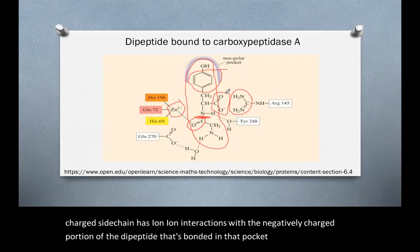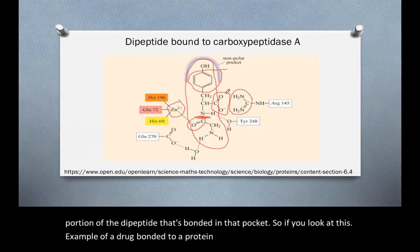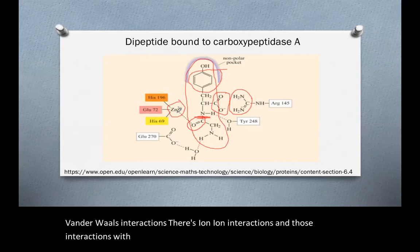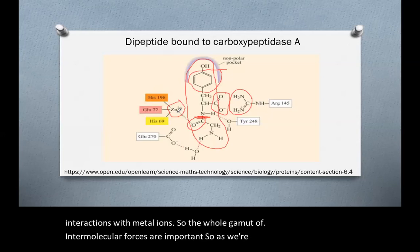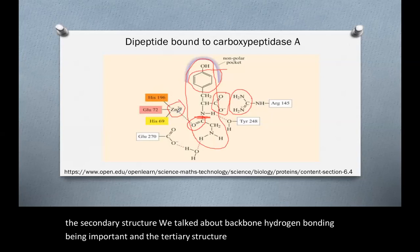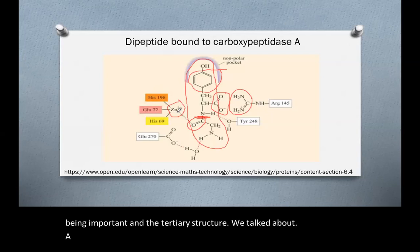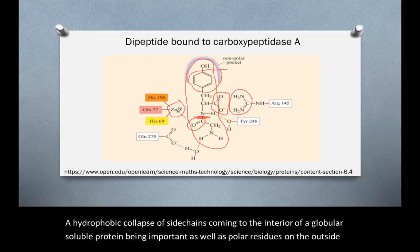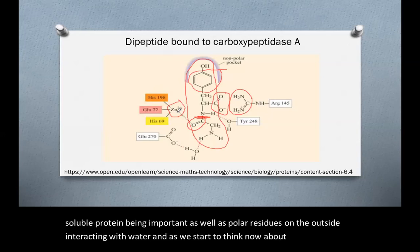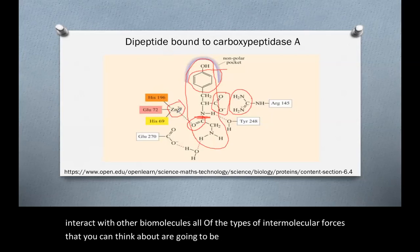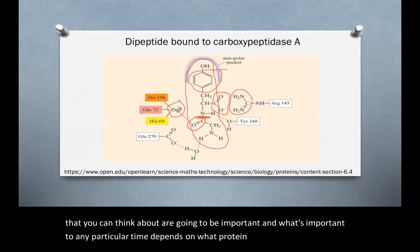So in this example of a drug bonded to a protein, there are hydrogen bonds, van der Waals interactions, ion-ion interactions, and interactions with metal ions — the whole gamut of intermolecular forces. In secondary structure, backbone hydrogen bonding is important. In tertiary structure, hydrophobic collapse of side chains to the interior of a globular soluble protein is important, along with polar residues on the outside interacting with water. As proteins interact with other biomolecules, all types of intermolecular forces matter, and which ones are important depends on the specific protein and the ligand bound to it.